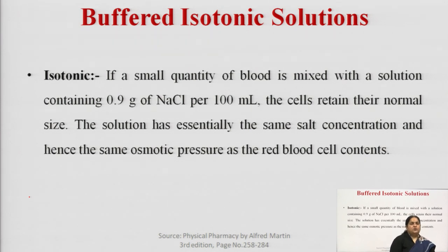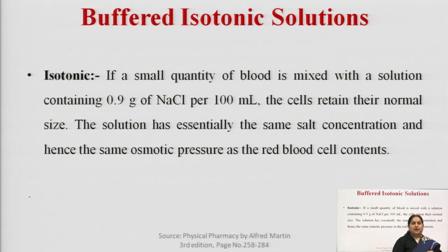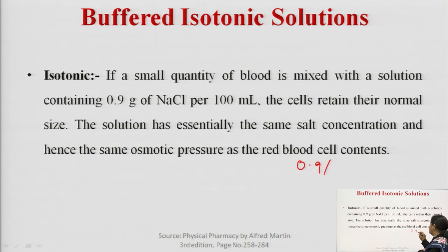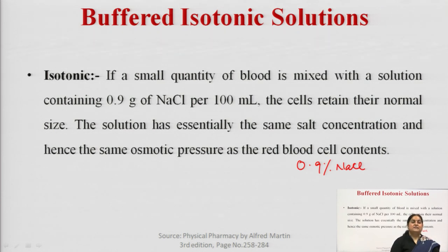What do you mean by isotonic? If a small quantity of blood is mixed with the solution containing 0.9 grams of NaCl per 100 ml, these cells retain their normal size and the solution has essentially the same salt concentration and hence the osmotic pressure as that of the red blood cells. So if two solutions are having the same osmotic pressure, they can be called isotonic solutions.